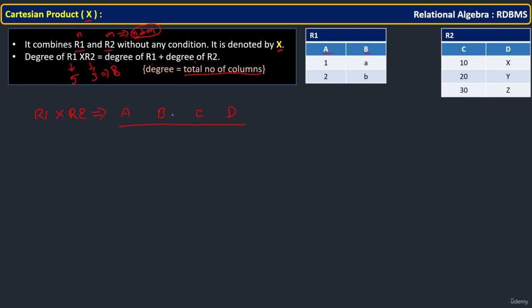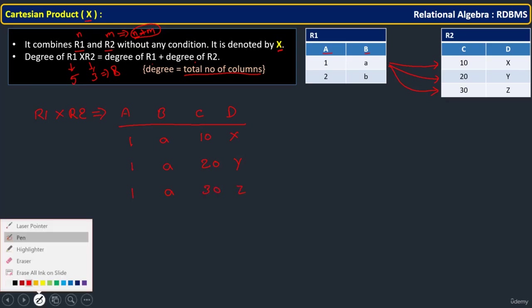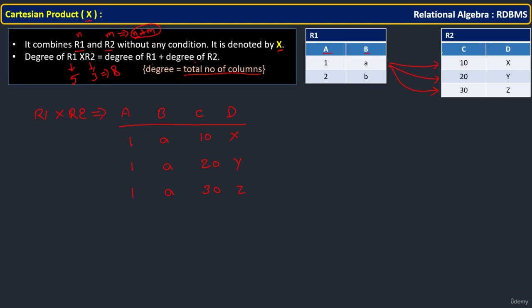Under these attributes A, B, C, D — total four attributes — the first row in R1 is combined with the first row in R2: that is 1A and 10X. The same first row in R1 is then combined with the second row in R2: 1A and 20Y. And again with the third row: 1A and 30Z. So one row in R1 is combined with all rows in R2.